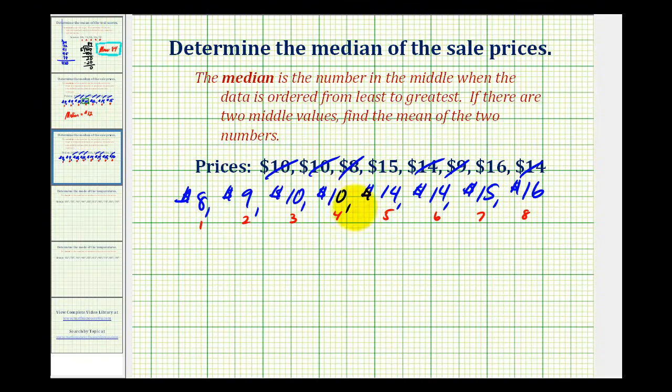So the middle would be right here, where there's four values above and four values below, which means to determine the median we'll have to use the two values in the middle, or the values in the fourth and fifth position. Notice how if we use these two as the middle, there are three to the right and three to the left. But when there are two values in the middle, we have to find the mean of these two to determine the median.